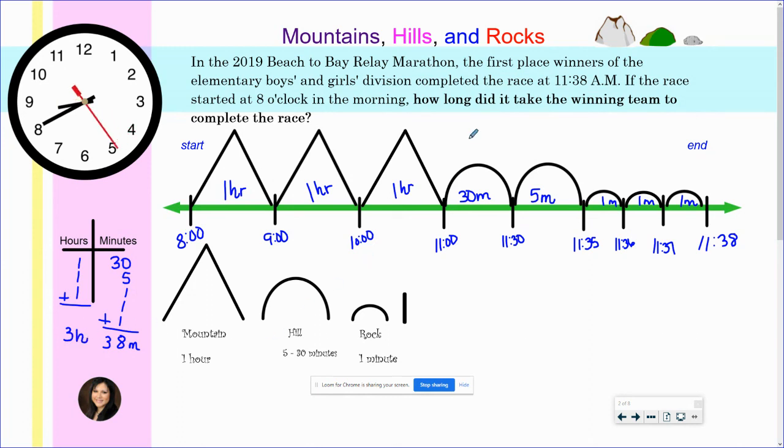So how long did it take the winning team to complete the race? It took them 3 hours and 38 minutes.